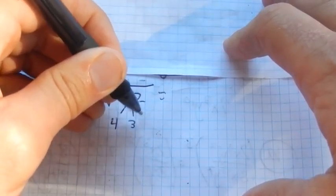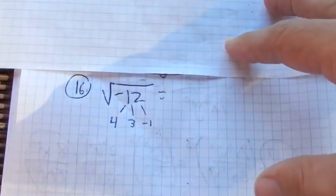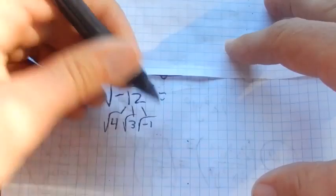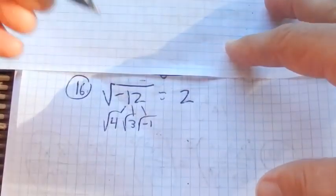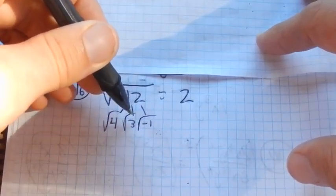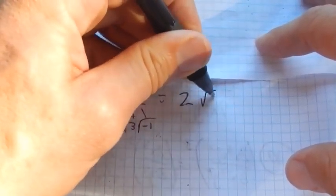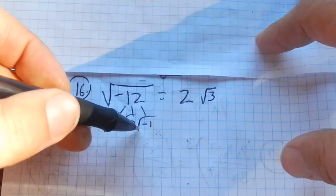So now that we know about imaginary numbers, we can start to reconcile this thing. I'm going to break this 12 up into some pieces: 4 times 3, and then times negative 1. And they're each being square rooted still.